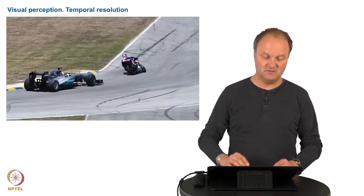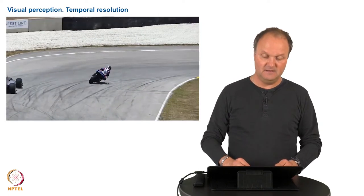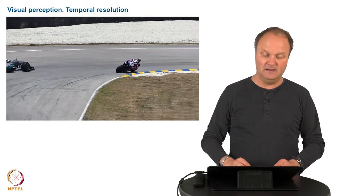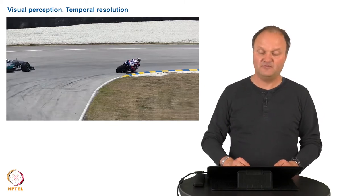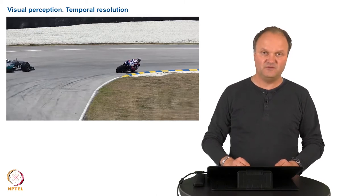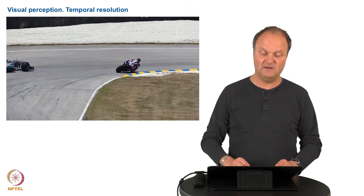Actually in order to be perceivable, a picture needs to be available, a visual stimulus needs to be available for approximately fifteen to fifty milliseconds. But we can actually start to perceive movements when we have at least three to five pictures per second.